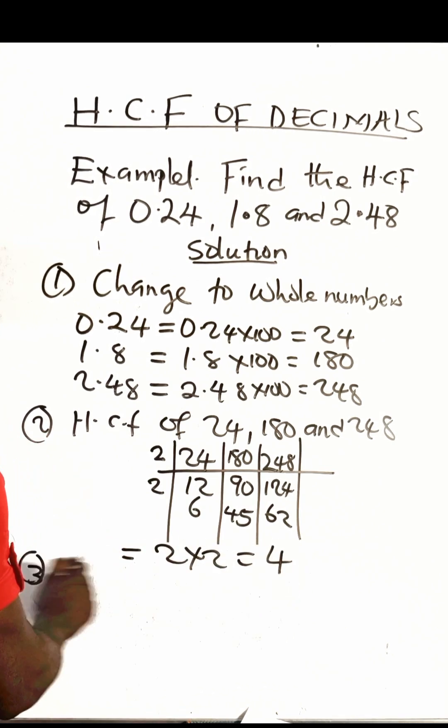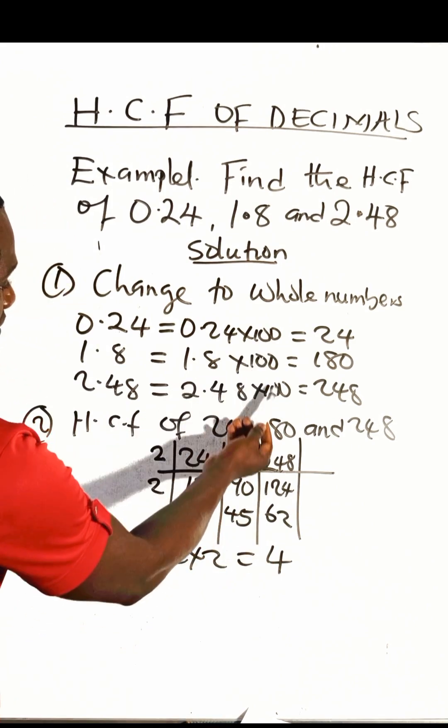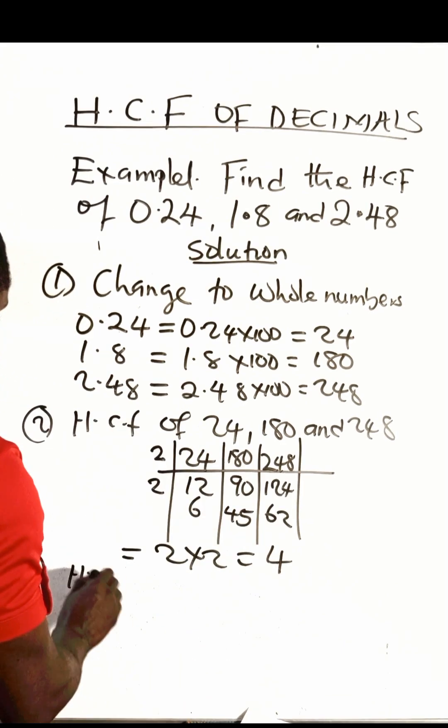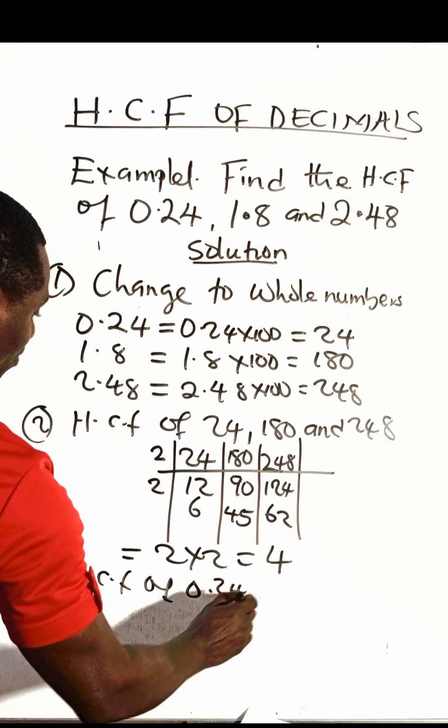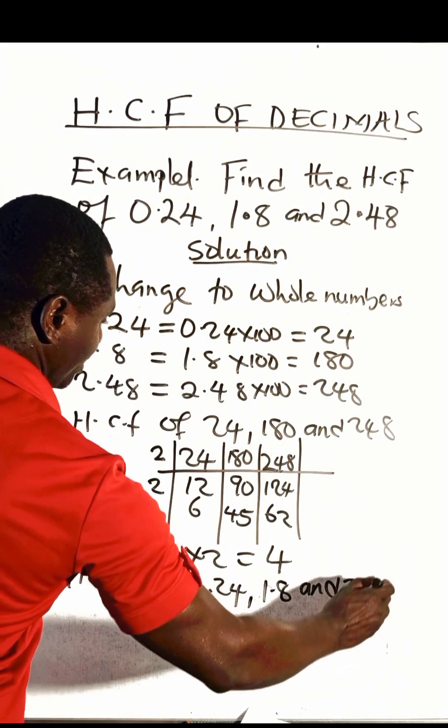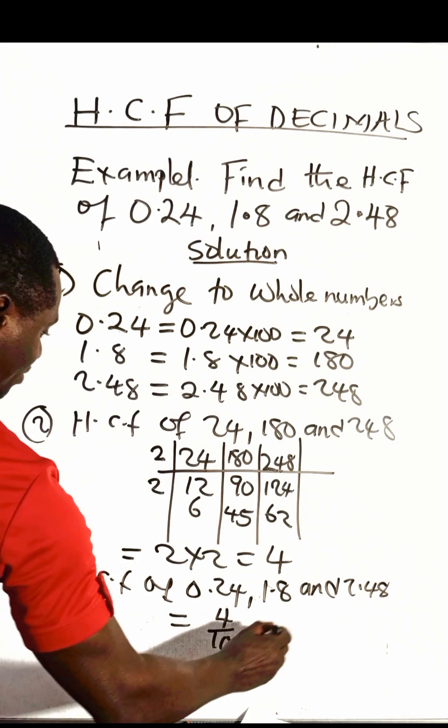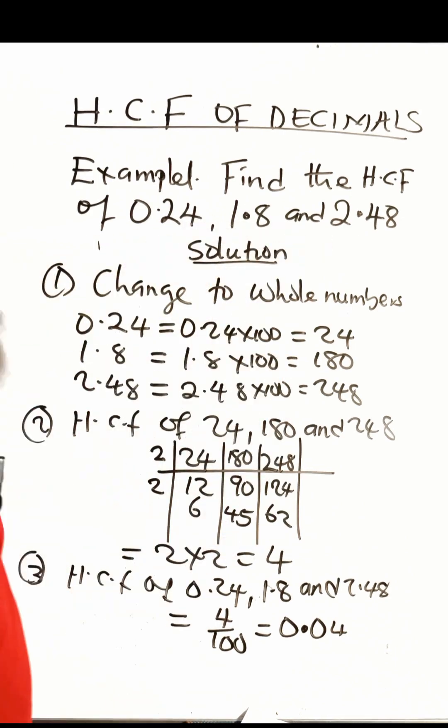Now the third step is to convert this back to a decimal. Remember we multiplied by 100, so we are going to divide this by 100 to get our final answer. Therefore, the HCF of the decimal numbers 0.24, 1.8, and 2.48 will be 4 divided by 100, and that gives us 0.04.